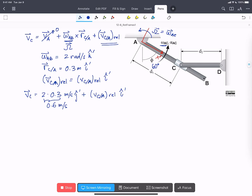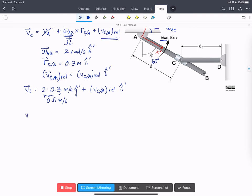All right, so we have 2 unknowns here, v C and v C with respect to A relative. So we need another equation for v C. And we're going to get that by analyzing rod CD.